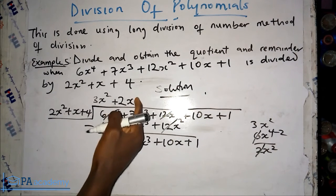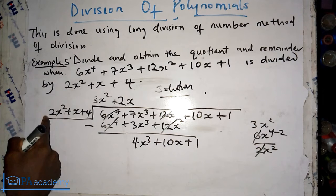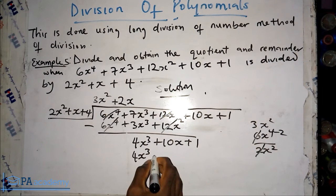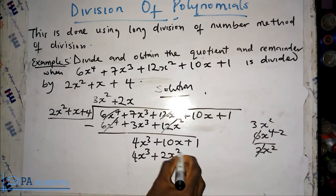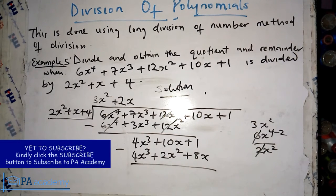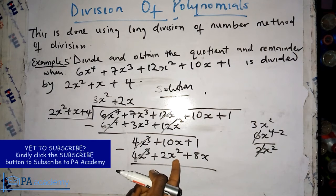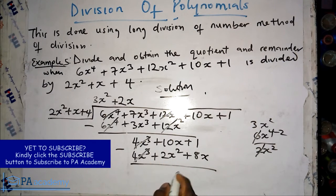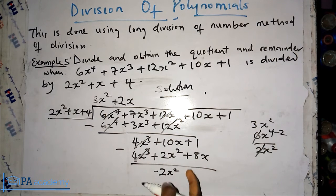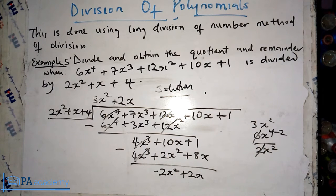Now 4x³ divided by 2x² gives plus 2x, which we add to the quotient. Multiplying: 2x times 2x² gives 4x³, 2x times x gives plus 2x², and 2x times 4 gives plus 8x. Subtracting: 4x³ cancels to zero. Then minus 2x² remains. 10x minus plus 8x gives plus 2x.